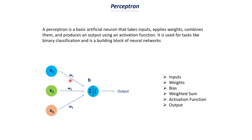Then we have weights — W1, W2, and W3. The number of weights equals the number of input features. These weights represent the importance or weightage of each input. For example, if age (x1) is an important factor for predicting diabetes, then age would have a higher weight. If some other input feature has less importance, it would have a lesser weight. So W1 is the weight for x1, W2 for x2, and W3 for x3. Weight basically signifies how important that input feature is.